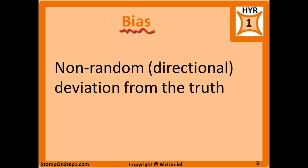Bias is non-random deviation from the truth. Non-random means it's directional. In research studies, bias would be problems with the study design or execution that cause you to consistently get distorted results — meaning the results are consistently skewed from what's actually going on. In most cases this means you're going to show a stronger association between what you're studying, such as a stronger association between the treatment and the outcome, or the risk factor and the outcome. This is different from the low precision you'd see with a small sample size, because bias means something is fundamentally wrong with what you're doing, and you're getting results that are consistently different than the truth.